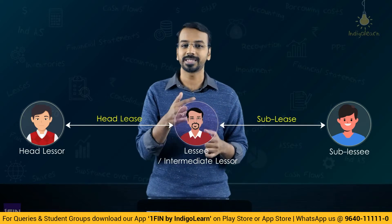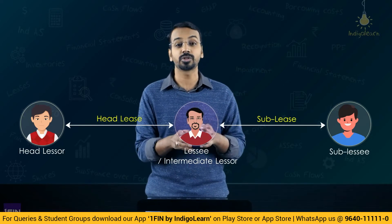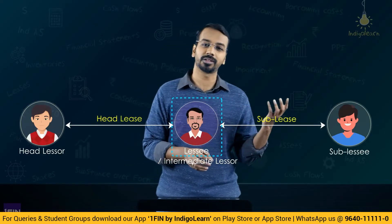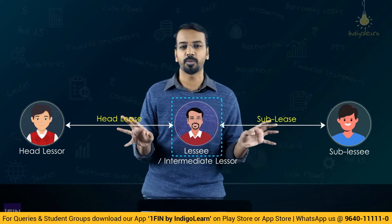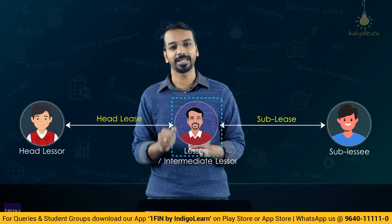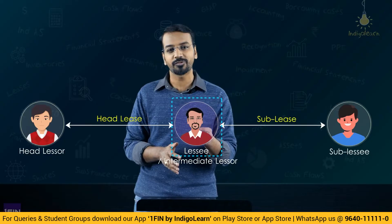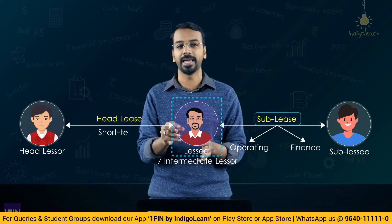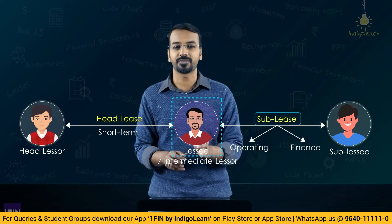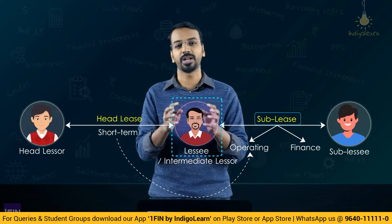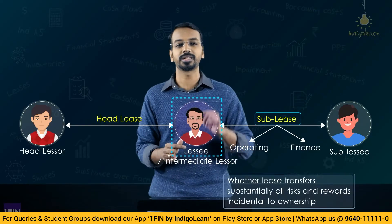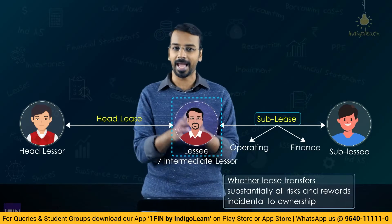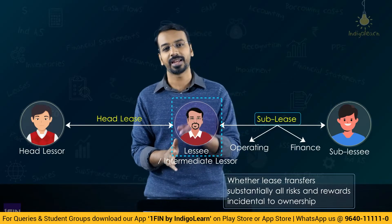The question is how to account for a sub-lease — specifically in the books of the intermediate lessor. The original lessor accounts for it as a normal lease, and for the sub-lessee it is also a normal lease transaction. The complication arises for the intermediate lessor, who must classify the sub-lease as an operating lease or a finance lease. If the original lease is a short-term lease, the intermediate lessor must compulsorily classify it as an operating lease. Otherwise, the intermediate lessor applies the substantial risks and rewards principles with reference to the right-of-use asset to classify it.